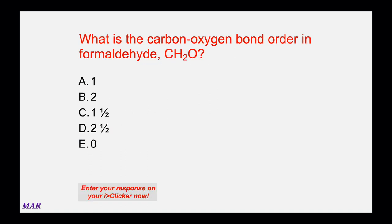What is the carbon-oxygen bond order in formaldehyde, CH₂O? Formaldehyde is the simplest aldehyde from organic chemistry. If you remember aldehydes, this may be easy. If not, draw the Lewis structure and determine the carbon-oxygen bond order. Pause the video, work on it, and when you're ready, unpause it to hear the answer.